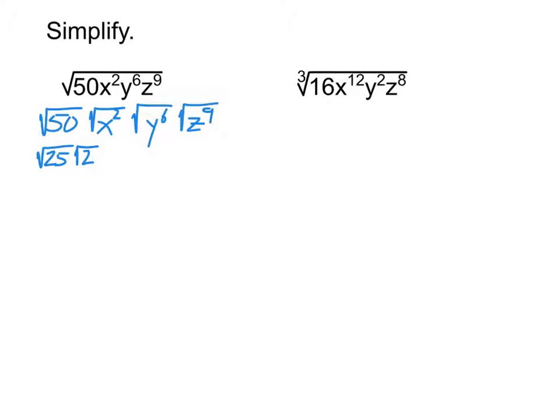And then I turn each of my variables into fractional exponents. So the square root of x squared is x to the power of 2 over 2. Square root of y to the 6 is y to the 6 over 2. Square root of z to the 9th is z to the 9 halves. Notice the variables are doing just what we did yesterday. So we're combining the old skill with the new skill here.